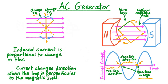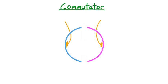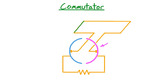Let's now use this fact to construct a commutator. The commutator needs to be a device that will reverse the connections between the generator and the circuit once every half cycle. Every commutator has two basic parts: a ring that's split into two halves, and a pair of brushes, one for each half of the ring. Both the brushes and the two halves of the ring are made of conducting materials so they form electrical contacts. The ring will be connected to an external circuit and the brushes will be connected to the wire loop of an AC generator.